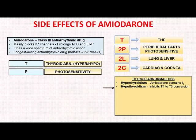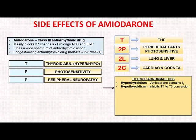Now coming to the other letters: the letter P refers to photosensitivity. A gray-blue discoloration of the skin may occur in sun-exposed areas of the body such as the face. P also refers to peripheral neuropathy. Amiodarone mainly causes proximal muscle weakness of the shoulder and the pelvic girdle.